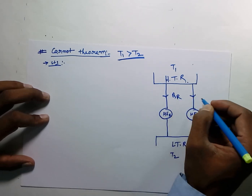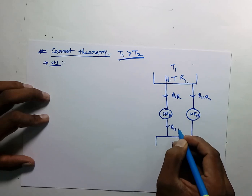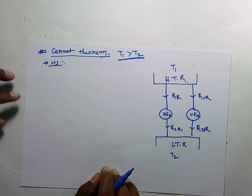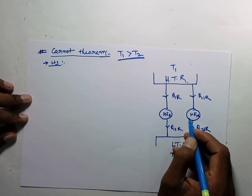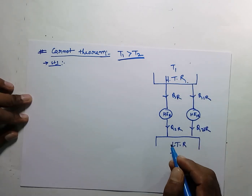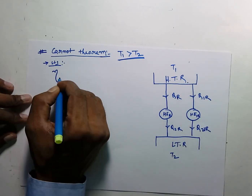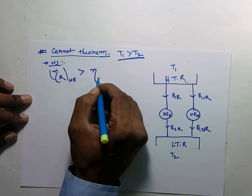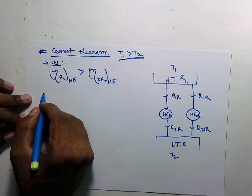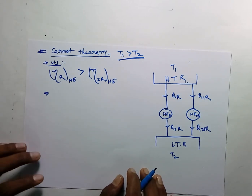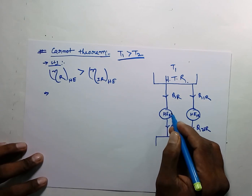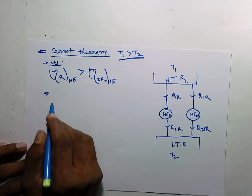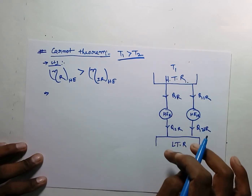Here we have QR, QIR, Q2R, and Q2IR. Carnot First Theorem states that if there are one reversible heat engine and one irreversible heat engine operating between two temperature limits T1 and T2, then the efficiency of the reversible heat engine will always be greater than the efficiency of the irreversible heat engine. This is the first statement. The second statement states that if there are more than one reversible heat engines operating between T1 and T2, then the efficiency of each and every heat engine will be the same.